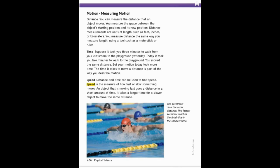Distance and time can be used to find speed. Speed is the measurement of how fast or slow something moves. An object that is moving fast goes a distance in a short amount of time — so the faster you move, the shorter time it takes you to get there. It takes a lot longer for a slower object to move the same distance. For example, if you are having a race outside and one person runs slow and the other runs fast, the fast person would get to the end of the race first because they have more speed.